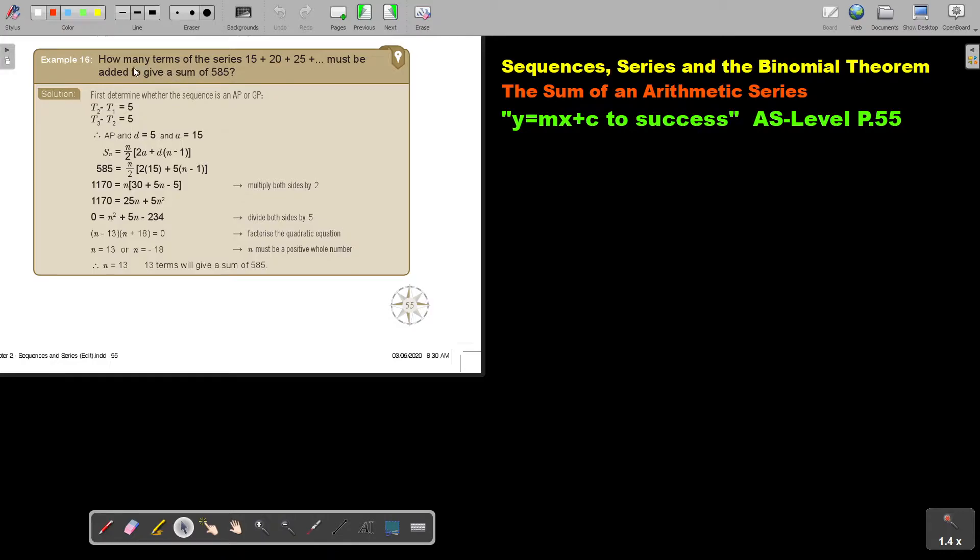Let's look at another example. How many terms in this series must be added to give a sum of? So it's not the last term, it's the total sum. So basically, I first determine, yes, it's definitely an AP because there's a difference of 5. So every time they add 5.